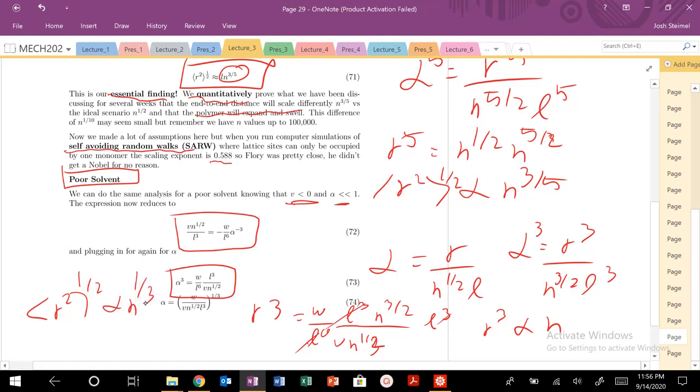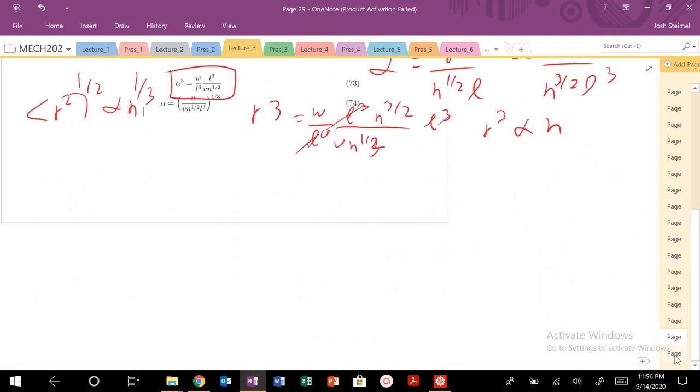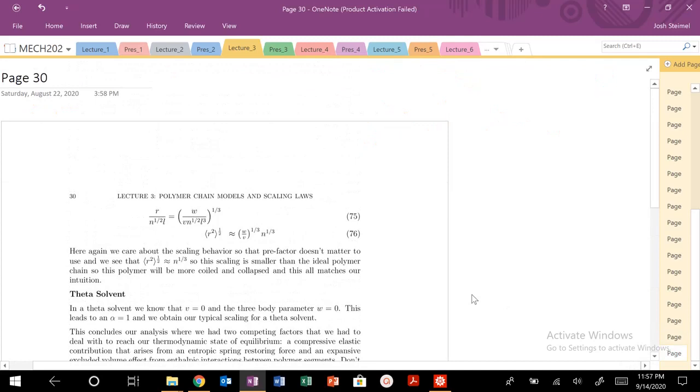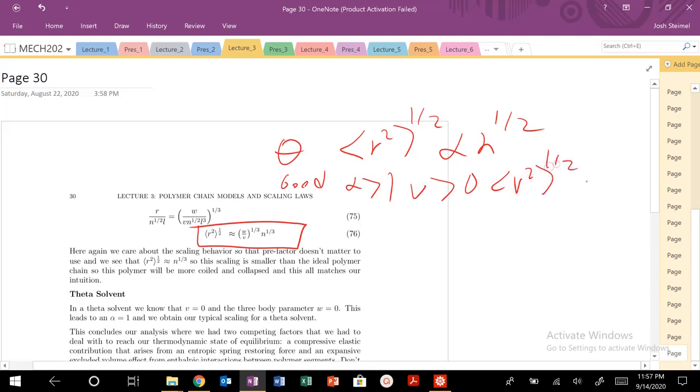And again, this should make sense, right? Quantitatively, we've proven our qualitative understanding. In a poor solvent, I am going to scale as n to the 1 third. So again, in an ideal solvent or ideal chain, we saw this scaling. Proportional to n to the 1 half. In a good solvent, so this is a theta for melt. For a good solvent, so for alpha greater than 1, for our nu greater than, basically larger than, you know, 0 positive, exactly. You know, very, very large, very, very good solvent.